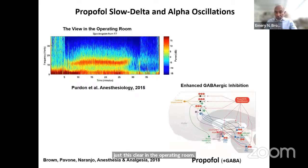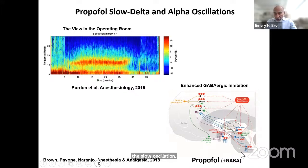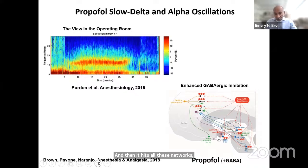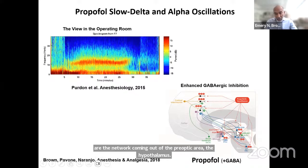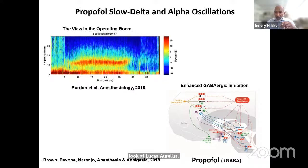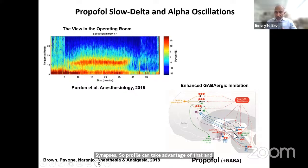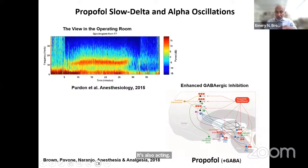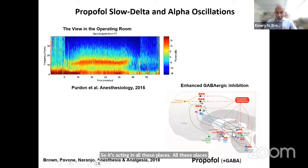To understand the slow delta oscillation, we need to look for brainstem targets. What are the principal brainstem targets for propofol? Propofol reaches the brainstem through the basilar artery, which runs along the underside of the pons, and hits networks including the preoptic area of the hypothalamus, which synapses on the arousal systems: the ventral periaqueductal gray, lateral dorsal tegmental tract, pedunculopontine tegmental tract, dorsal raphe, and locus coeruleus. These are inhibitory GABAergic synapses, so propofol can take advantage of them — this is likely where it acts to generate those slow oscillations.